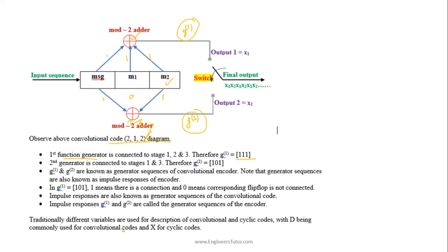These generator sequences are also known as impulse responses of the encoder. Here, 1 means there is a connection and 0 means the corresponding flip-flop is not connected to the function generator. Function generator means modulo-2 adder.